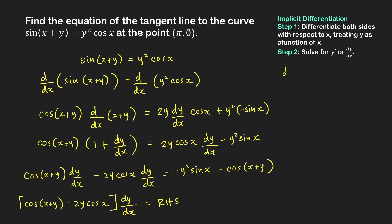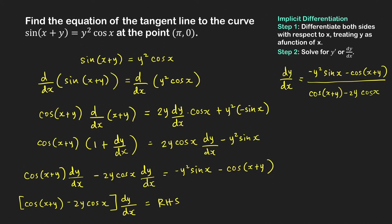Therefore, dy/dx equals negative y squared sine x minus cosine of x plus y, all over cosine of x plus y minus 2y cosine x. If we prefer no negative signs in the numerator, we multiply numerator and denominator by negative 1, giving dy/dx equal to y squared sine x plus cosine of x plus y, all over 2y cosine x minus cosine of x plus y.